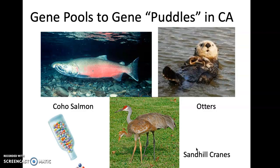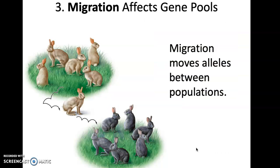Other examples of a gene pool reduced to what I'm calling a gene puddle include coho salmon, the otter population — which is doing better but still lacks diversity — and sandhill cranes, another amazing bird that used to be very prevalent in this area.